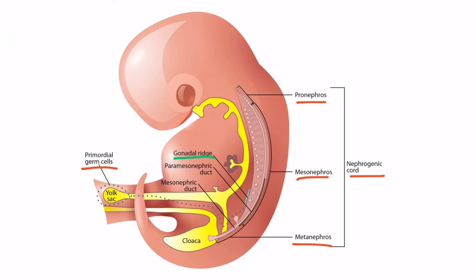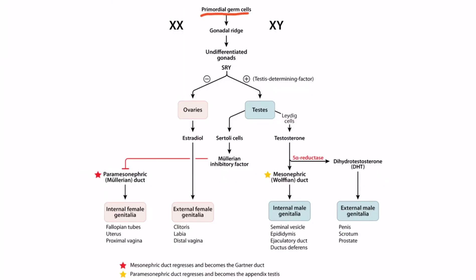Depending upon the presence or absence of the SRY gene, we'll determine what happens next. The primordial germ cells migrate to the gonadal ridge and become undifferentiated gonads. If the SRY gene is present, it will produce testis determining factor, and this promotes the differentiation of the undifferentiated gonads into testes. If there is no SRY gene, ovaries will develop. Once the gonads have differentiated, they start secreting sex-specific hormones: the ovaries secrete estradiol, and the testes secrete Müllerian inhibitory factor from Sertoli cells and testosterone from Leydig cells. These hormones dictate what type of internal or external genitalia will form.